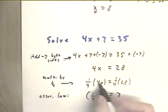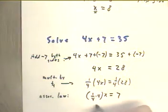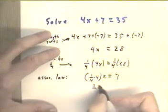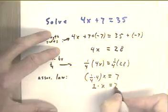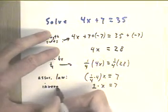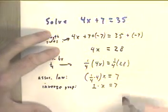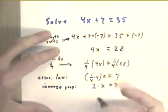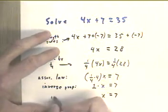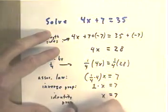We regroup the 1 fourth times 4x into 1 fourth times 4 times x, giving us 1 times x equals 7 by the inverse property of multiplication. 1 fourth being the multiplicative inverse of 4. And that gives us x equals 7 by the identity property of multiplication.